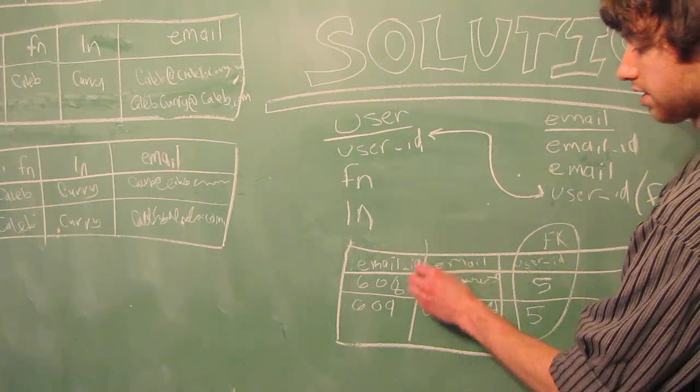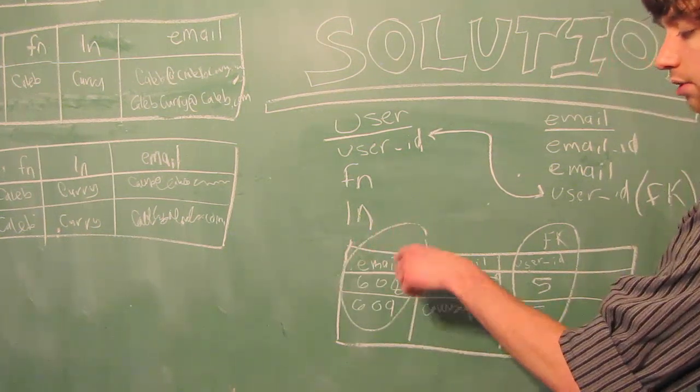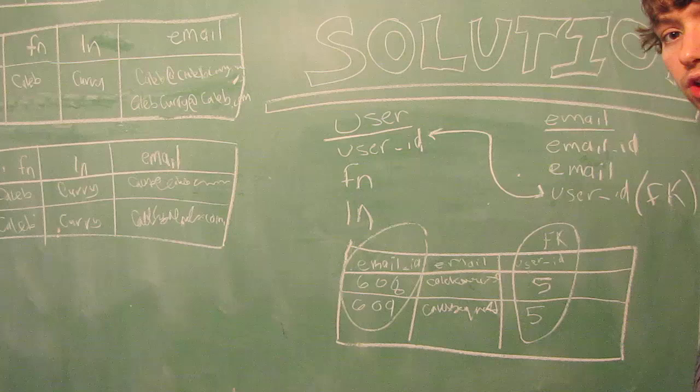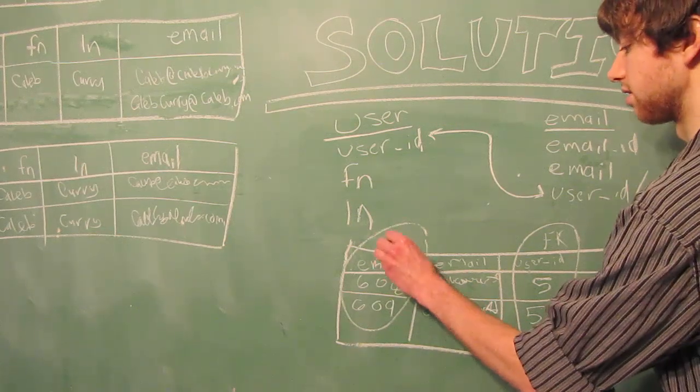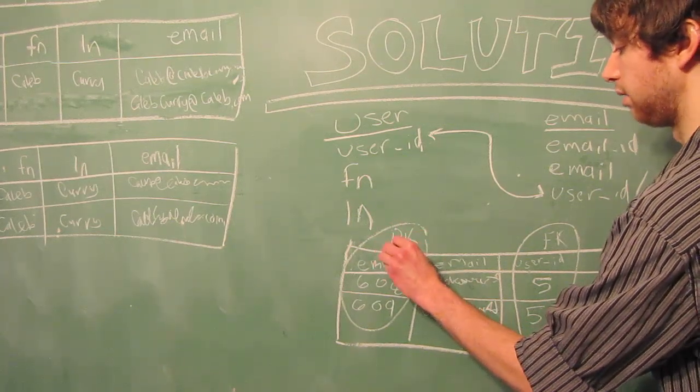This email ID, this is not okay to repeat because each individual number should be a separate email because this is the primary key of the email table.